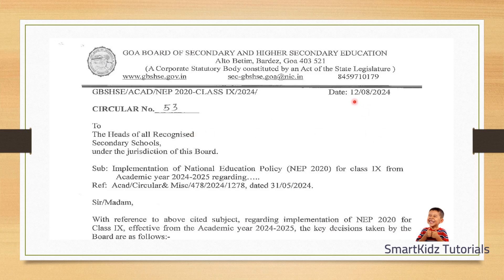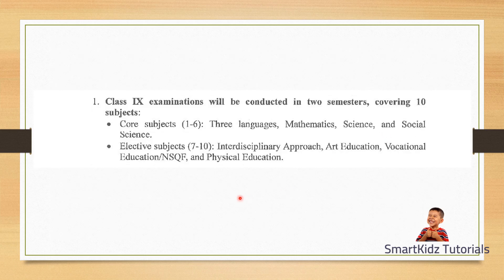GoaBoard came out with this circular on 12th of August 2024, and it was sent to all the heads of recognized secondary schools under GoaBoard. It referred to the implementation of the National Education Policy NEP 2020 for class 9 for the academic year 2024-25. We will see what decisions were taken by the board for class 9. First, class 9 examinations will be conducted in two semesters covering 10 subjects.